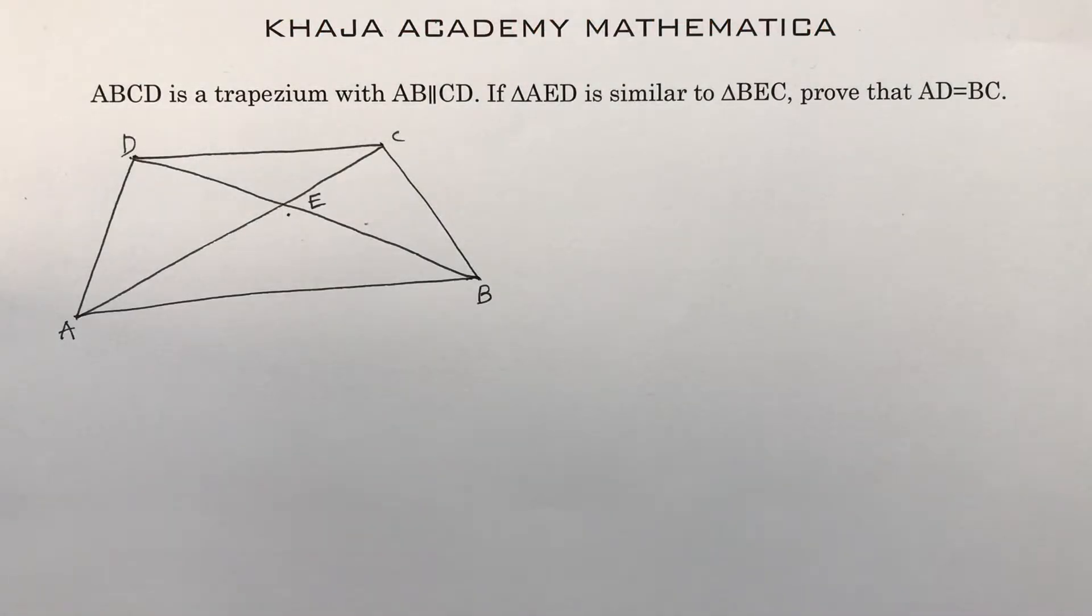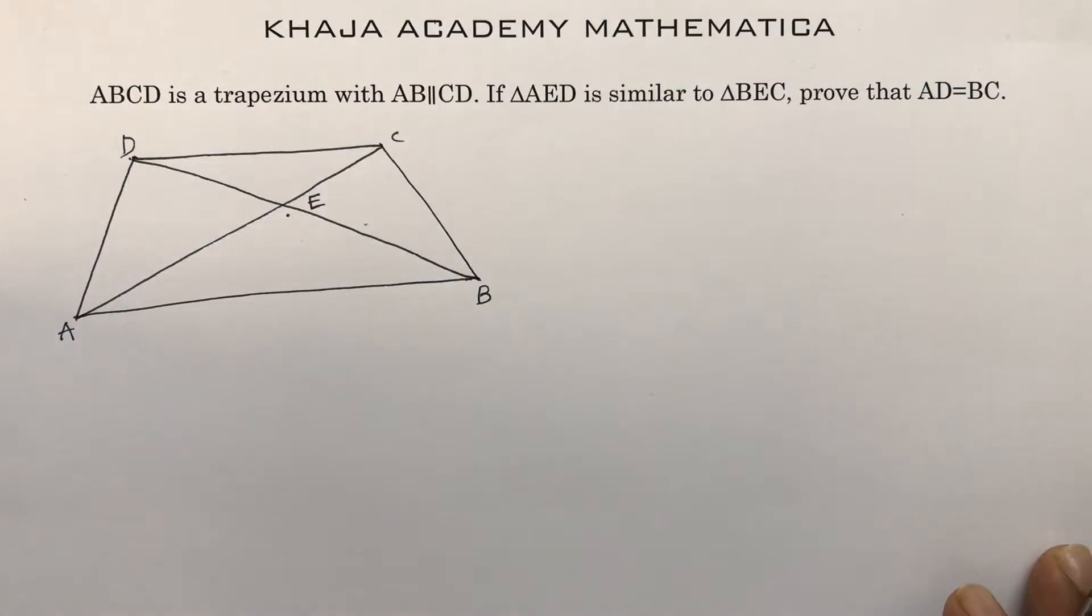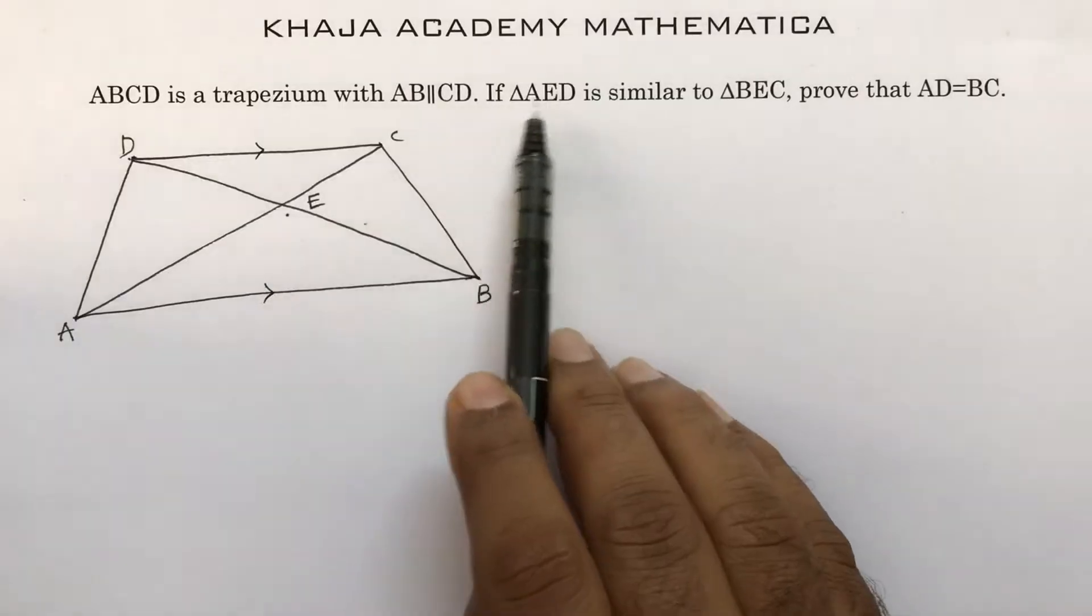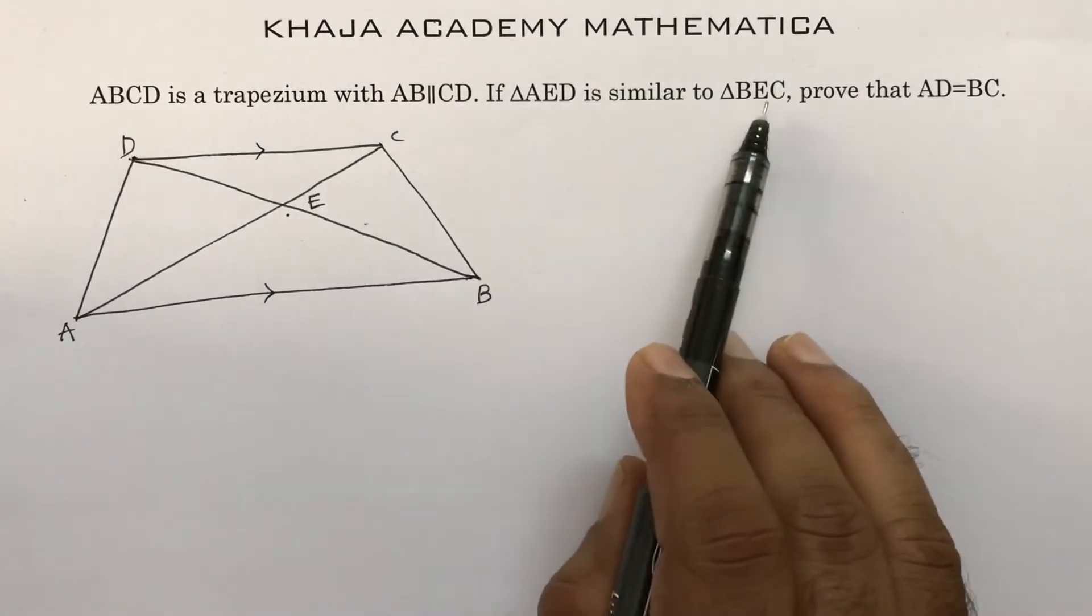Class tenth important problem from similar triangles. ABCD is a trapezium in which AB is parallel to CD and triangle AED is similar to triangle BEC.